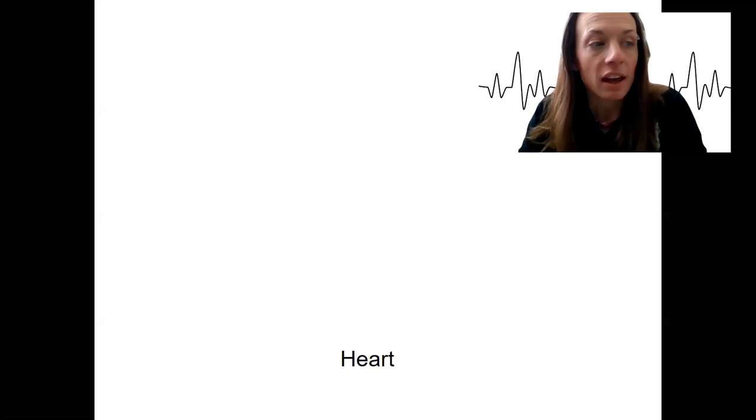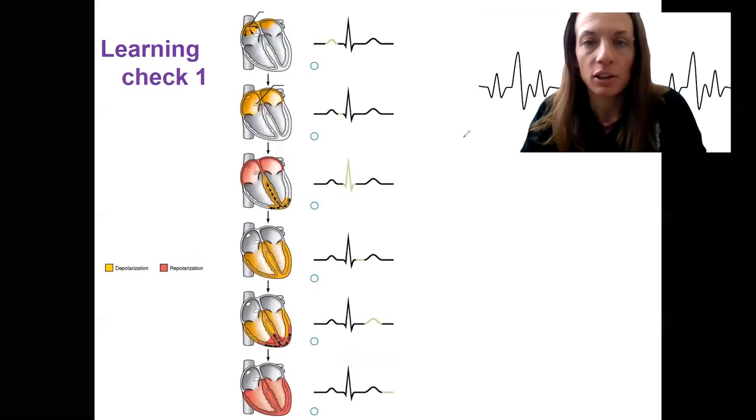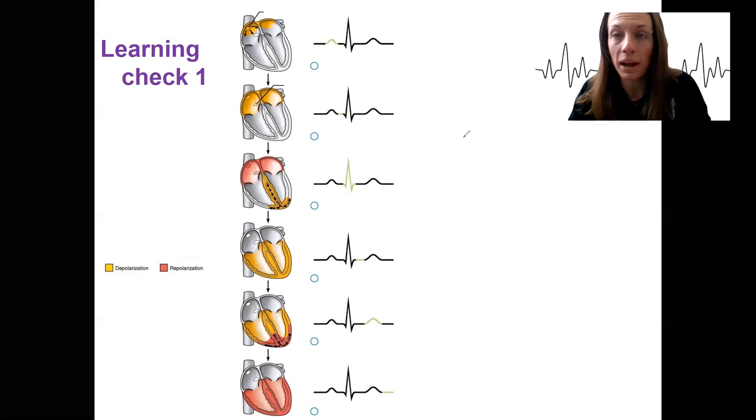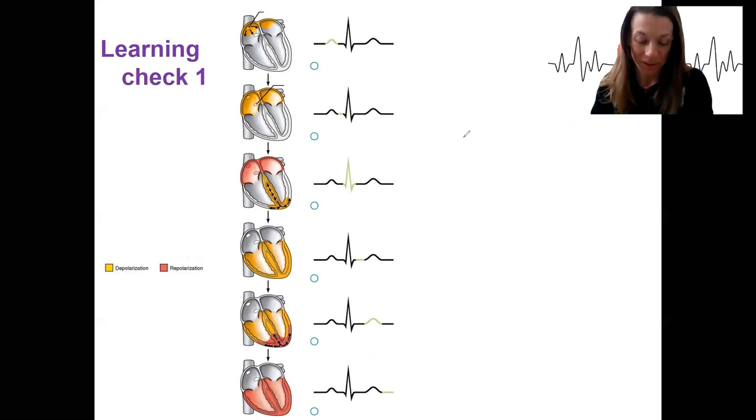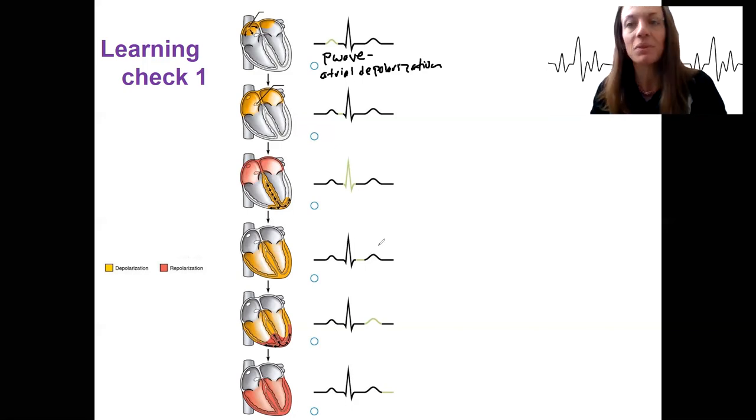I want to start with a learning check and then tie it into the next piece here. I'd like you to label the names of these waves or intervals and what's happening. I'll just do the first one here, and then I'll show the answers. Here, this is our P wave initiated at the SA node, and this represents atrial depolarization. That's the electrical event. So you should be able to do the rest of these. Some of them are just an interval in between different things, so pause to label these. Do a learning check.